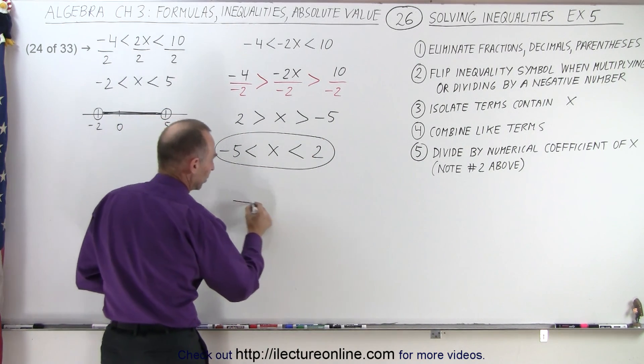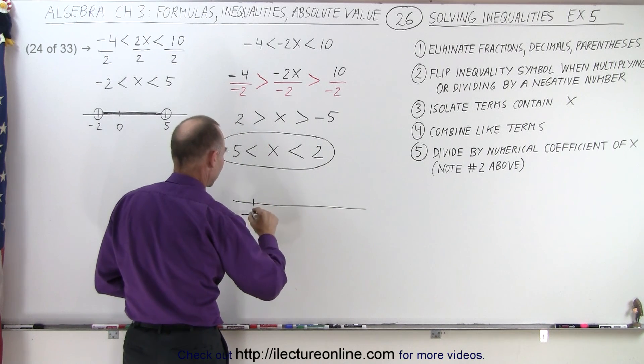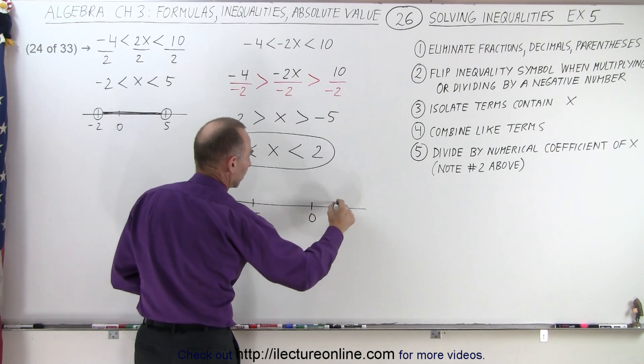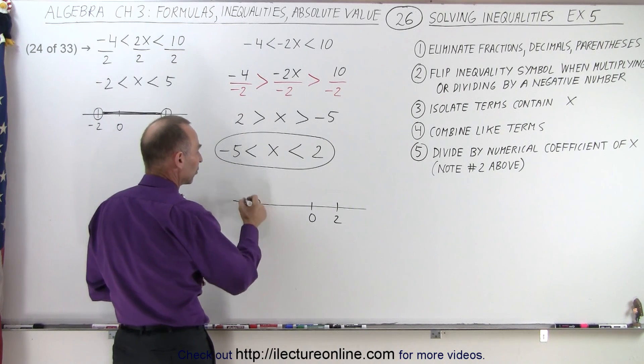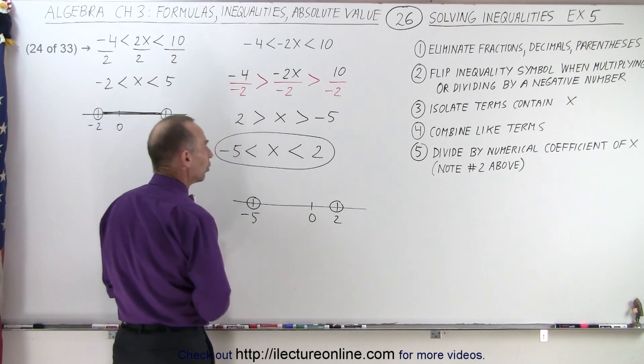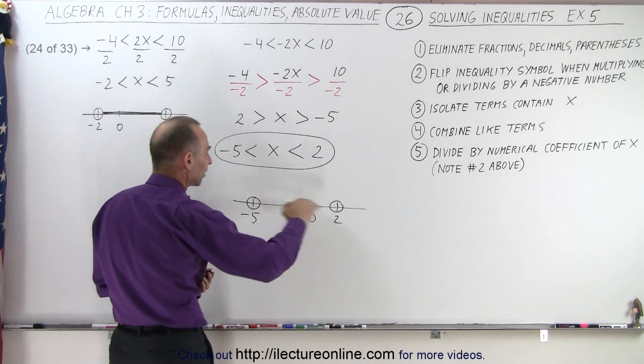If we're going to graph this solution, we end up with a negative 5 over here, a 0, a 2, like that. Notice that the endpoints, again, are not included, so we draw little open circles. It's all the values in between.